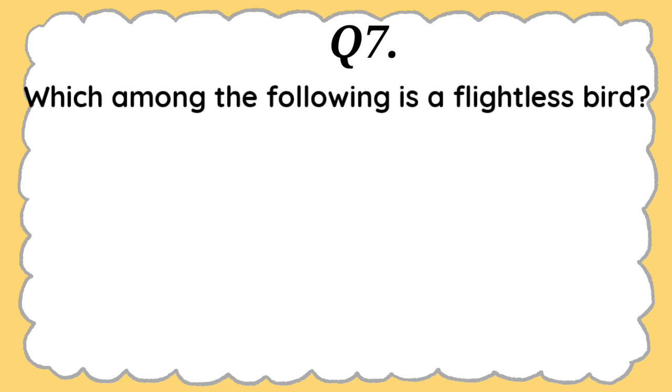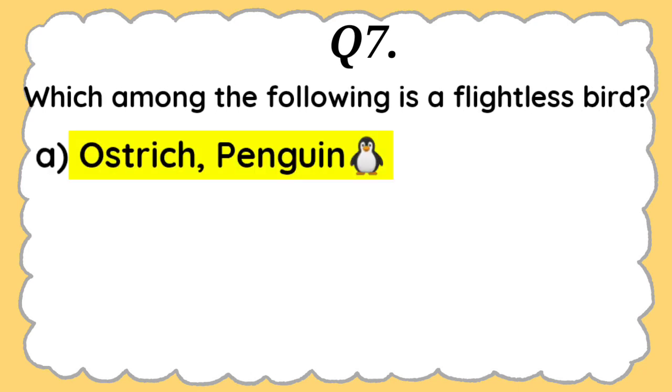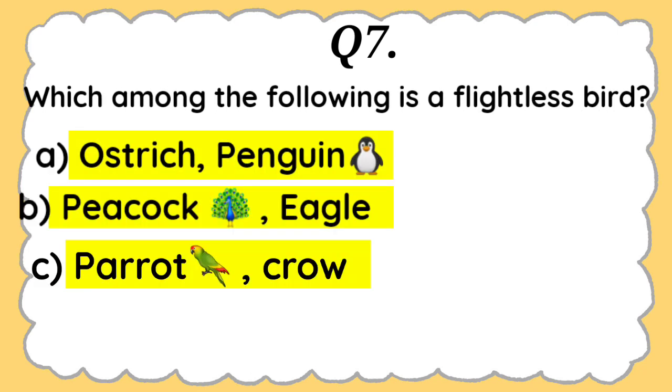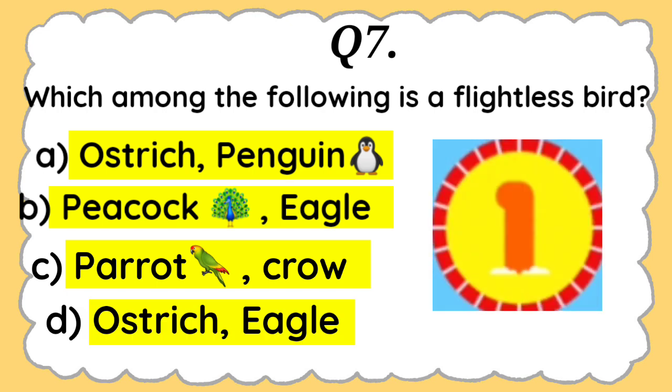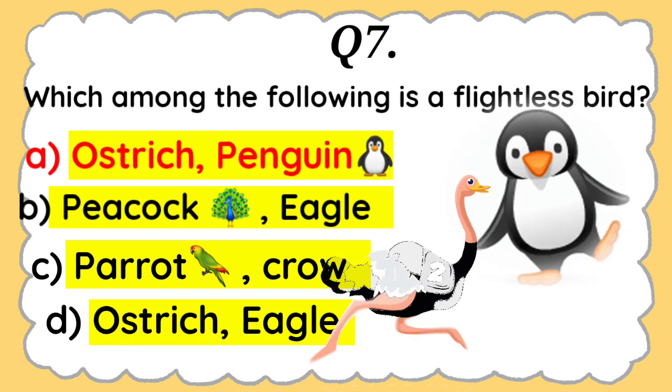Question 7: Which among the following is a flightless bird? Ostrich penguin, peacock eagle, parrot crow, or ostrich eagle. And the answer is Ostrich penguin.